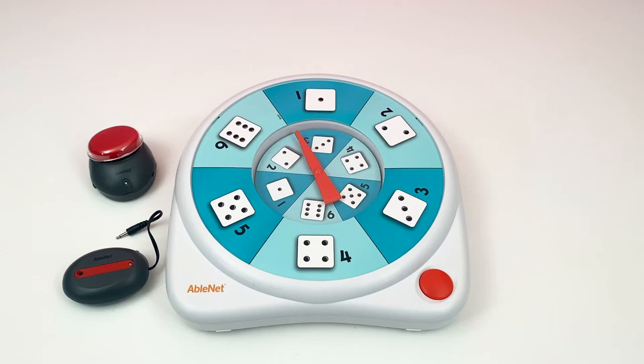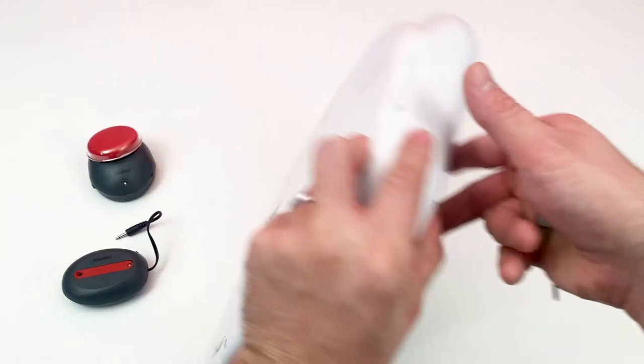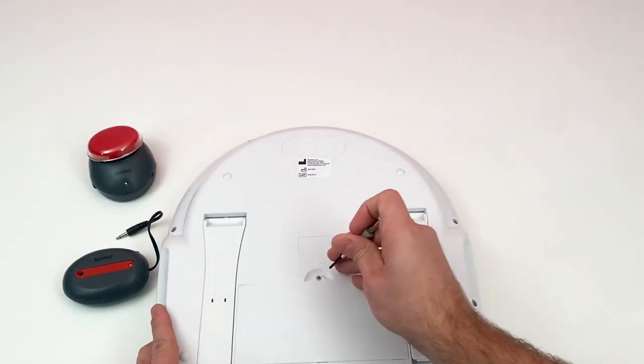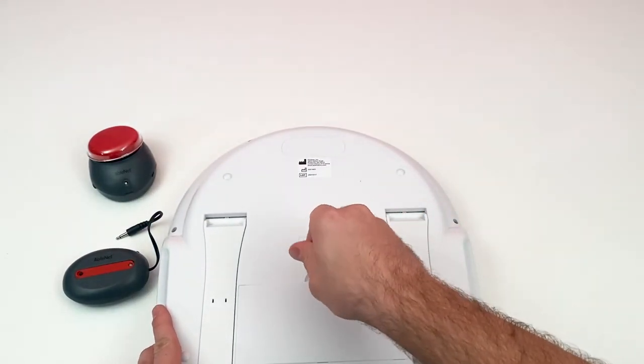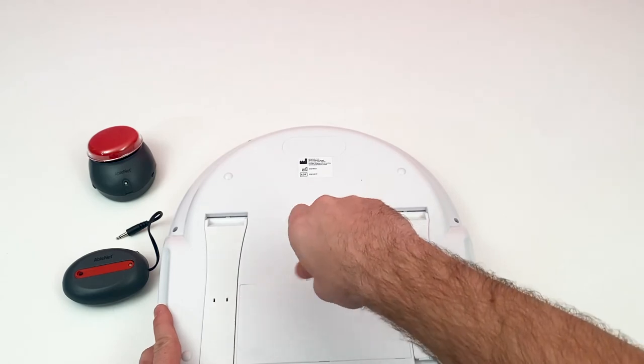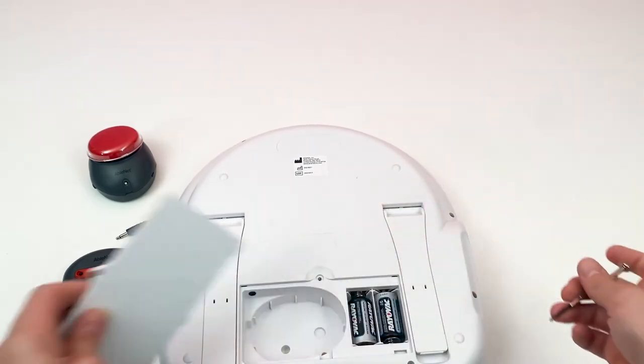To install the receiver, begin by removing the screw from the back panel. Next, open the back panel.